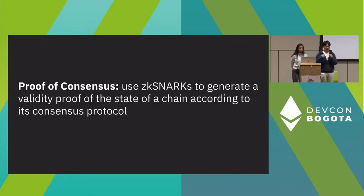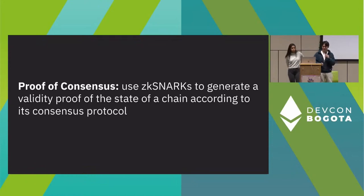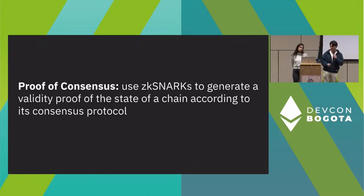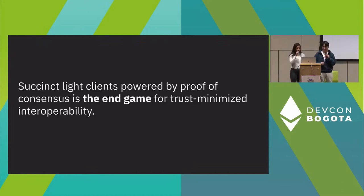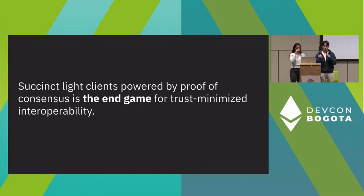For these reasons, we're trying to coin a term called proof of consensus. We're essentially building bridges which use ZK SNARKs to generate a validity proof of the state of some blockchain. We believe that these things called succinct light clients will be sort of the endgame for cross-chain interoperability between many different ecosystems.